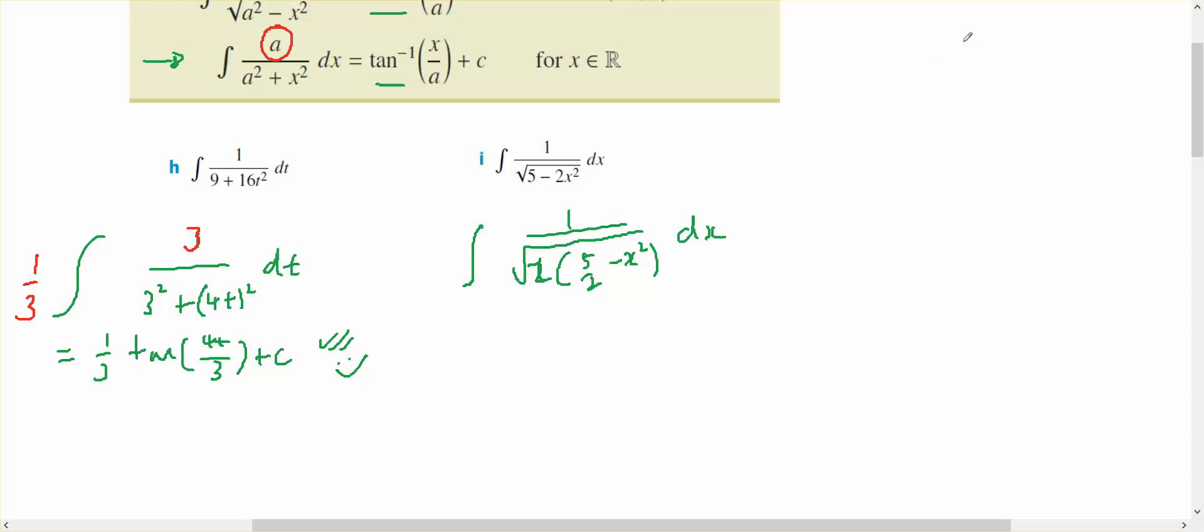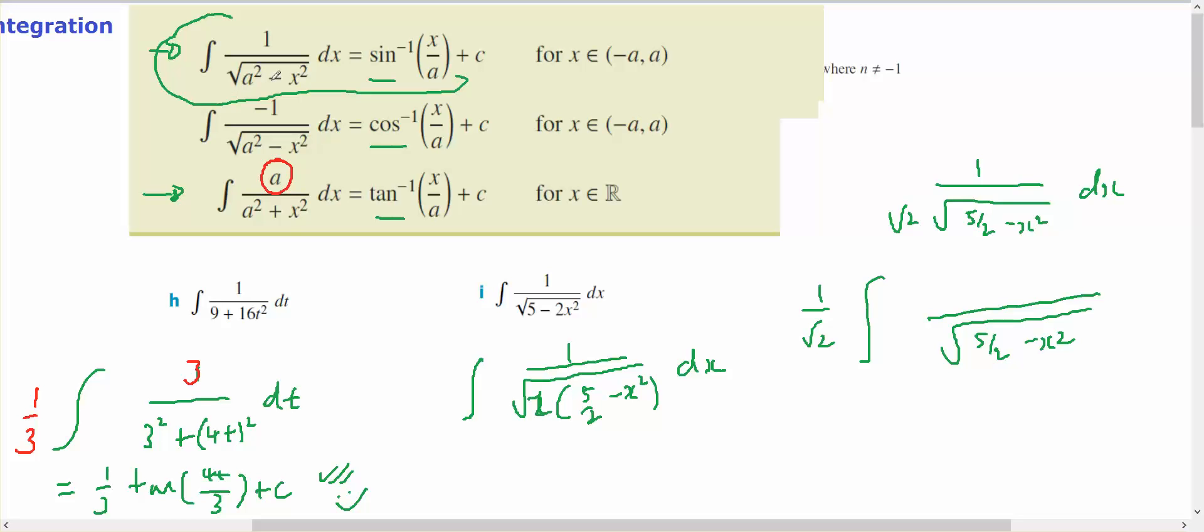I can write this as being 1 on top of root 2 square root of 5 on 2 minus x squared dx. I've got a 1 on root 2 outside of here, and I've got a square root of 5 on 2 minus x squared. If I'm looking at this, I've got to have a squared there, which means a squared in this particular case will be root 5 on root 2. A squared is 5 on 2, a equals root 5 on root 2.